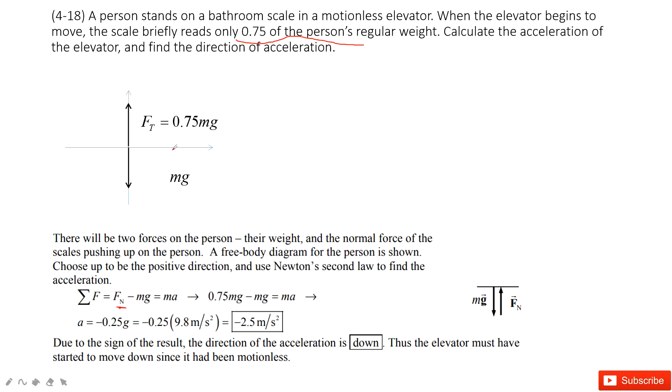So we have 0.75mg minus mg equals mass times acceleration. And then we find the acceleration is negative 0.25g.